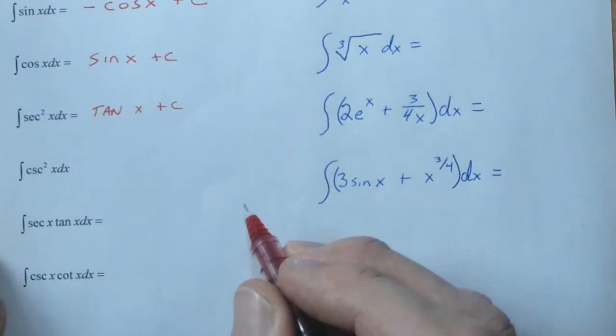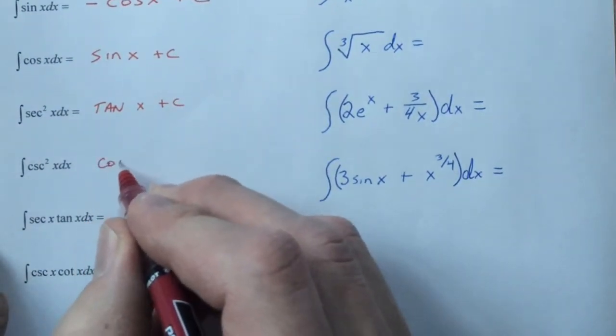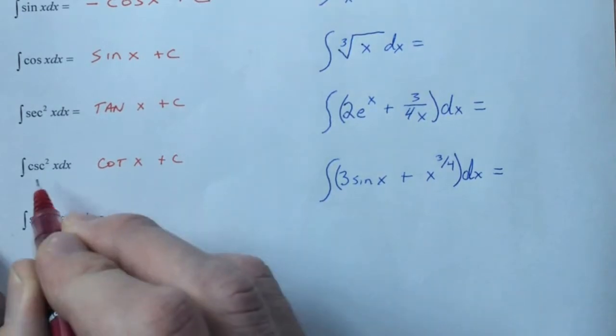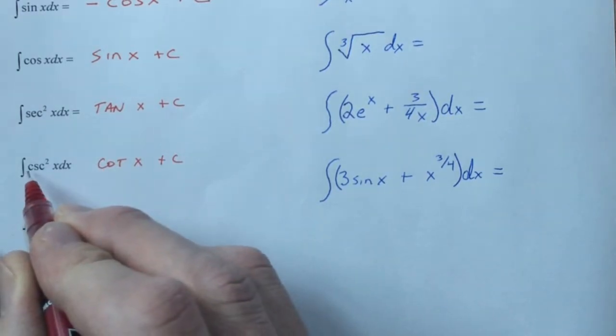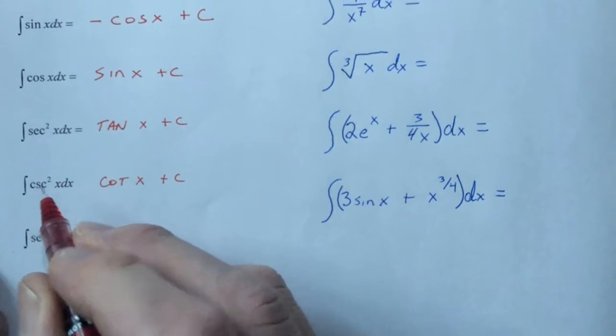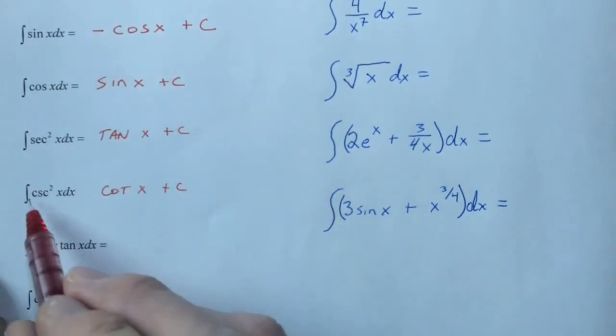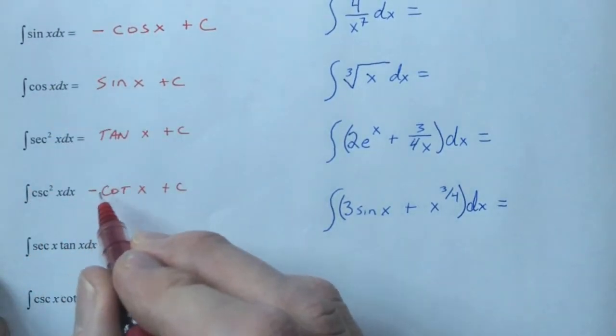Cosecant squared, remember, that was the derivative of cotangent. However, the derivative of cotangent is actually negative cosecant squared. So in the same manner that the negative sign is missing from up here, the negative sign is missing right here, we need a negative sign to counterbalance that.